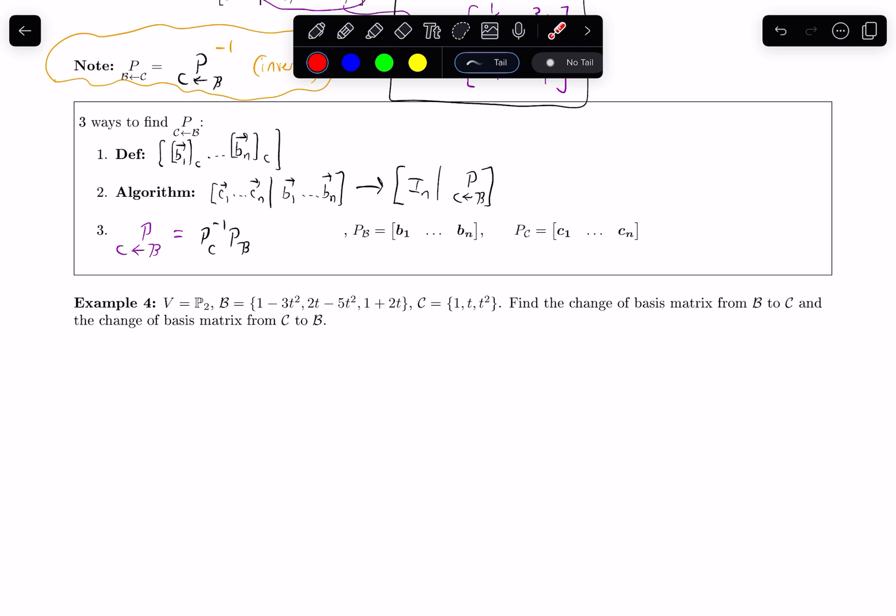Over our last couple of videos, we've seen three methods for finding that change of coordinates matrix. In all the examples that we've done using them, we have been working with column vectors, vectors in Rn. We haven't been working with things like polynomials. So it would be great if there's a way for me to not be working with polynomials but be working with column vectors instead.